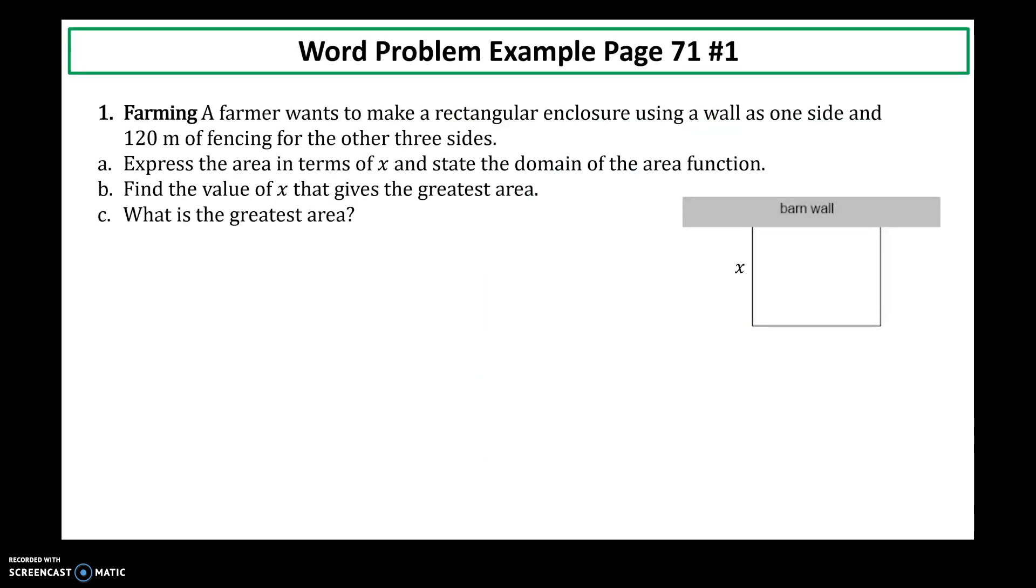So this is from the textbook number 1 on page 71. A farmer wants to make a rectangular enclosure using a wall as one side and 120 meters of fencing for the other three sides. So here's our figure. Here's the barn wall. So that won't be used, or that will be used, rather. So we wouldn't need any material to go along the barn wall.